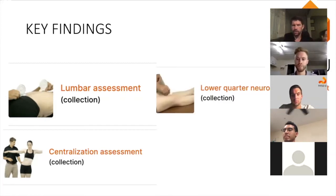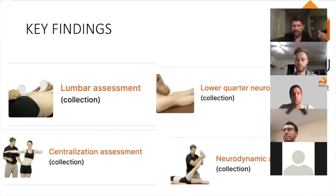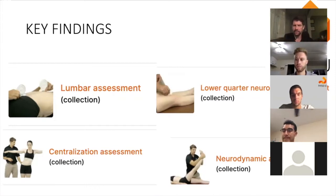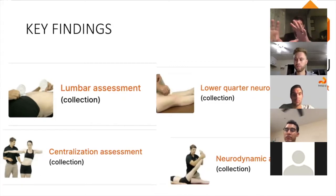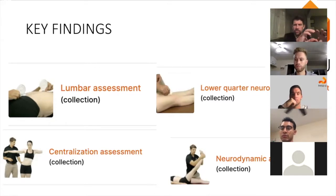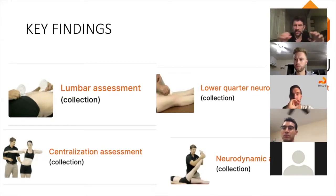Key findings summary: lower quarter neuro exam, neurodynamic exam including slump and straight leg raise. We're trying to identify whether the pain is coming from a nerve — nerve involved — or from a structure in the back causing referred pain felt in the legs.